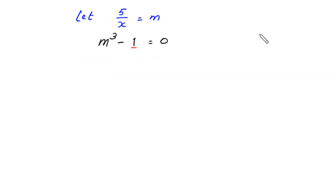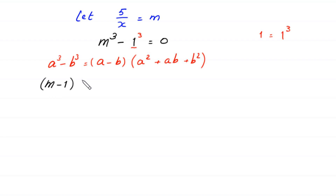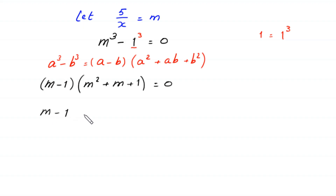This 1 is the same as 1³, so we can write 1 as 1³. According to the algebraic identity a³ minus b³ equals (a minus b)(a² plus ab plus b²), this m³ minus 1³ can be factorized as (m minus 1)(m² plus m plus 1) is equal to 0.